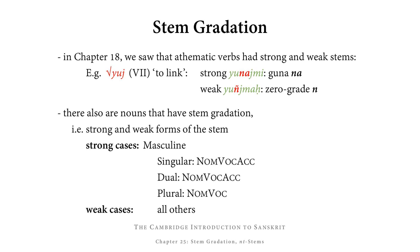In Chapter 18 we saw that athematic verbs had stem gradation, i.e. they had strong and weak stems. For example, from the root yuj, which is class 7, we had a strong stem yunaj and a weak stem yunj. In the strong stem, na was added before the stem-final consonant, and in the weak stem, n was added before the stem-final consonant. Na is guna — it has an a that makes it strong — while n does not have a vowel; it's zero grade, and that's what we use for the weak stem.